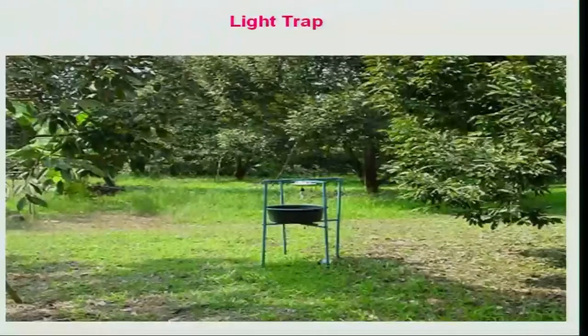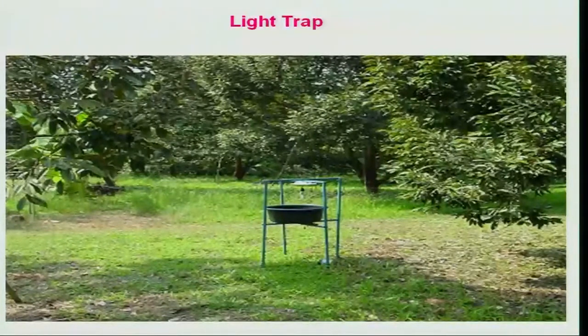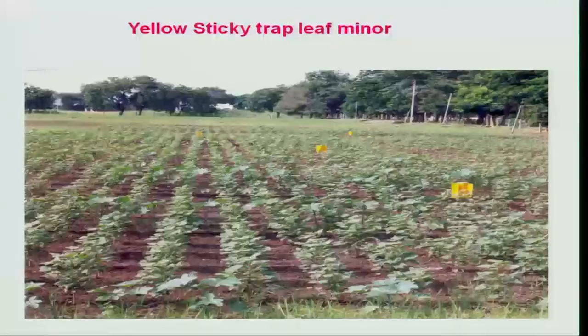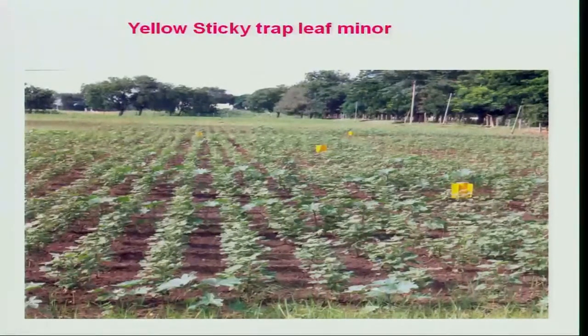The design of the trap, the placement of these traps, the height at which we keep them, and the time at which we keep them all improve the efficiency of light trapping. For example, in an orchard a simple light trap having a mercury bulb as the light source can be used, placing a water tub with water in it and putting some kerosene or insecticide solution into that tray. Whatever insects are attracted to the light will fall into the water, and because of the kerosene or insecticide, the attracted insects will be killed.